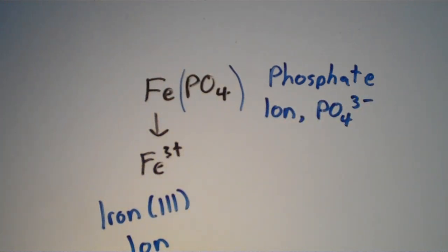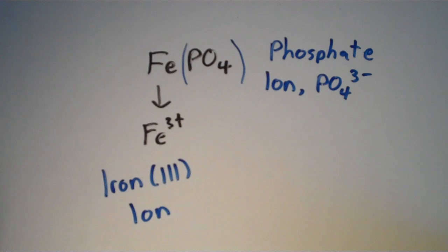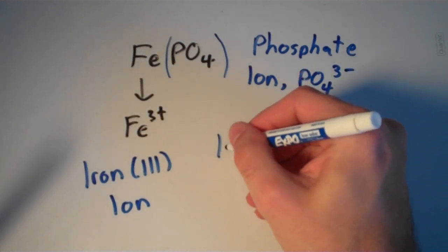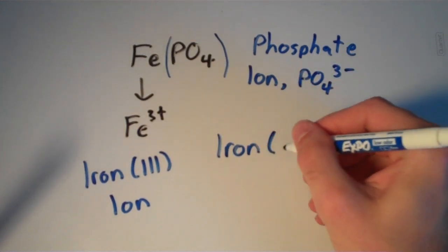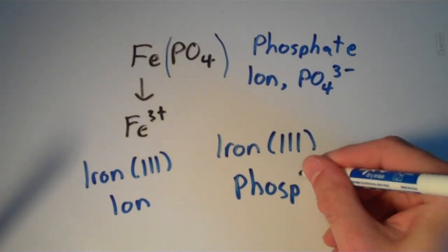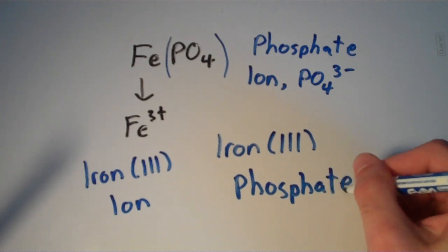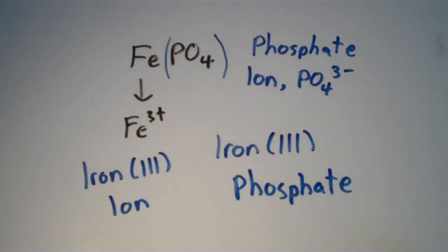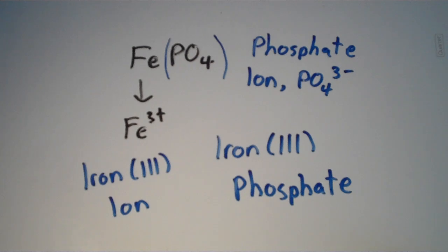So this is a case where we do have to use the Roman numeral because iron forms many different cations. So putting it all together, the name of this compound is iron(III) phosphate. So there you go. That is how to name ionic compounds.